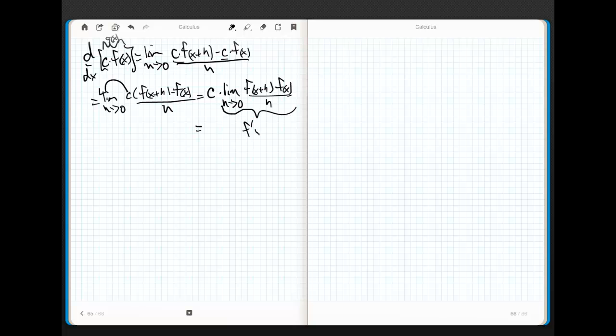This guy is f prime of x, and the constant is just along for the ride. In other words, the derivative of a constant times the function is simply the constant times the derivative of the function.